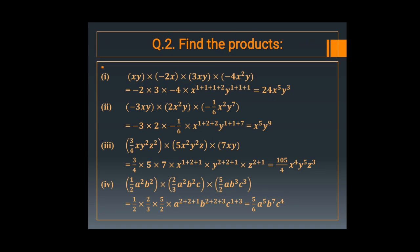The second part: minus 3xy multiplied by 2 x square y, then multiplied by minus 1 upon 6 x square y raise to the power 7. Here: minus 3 into 2 into minus 1 upon 6 — the coefficients multiply out accordingly.